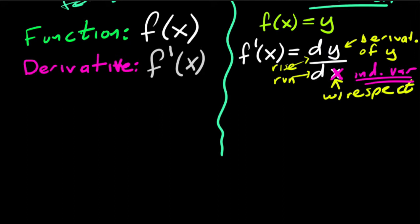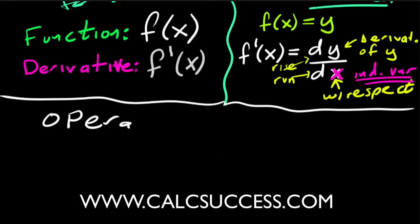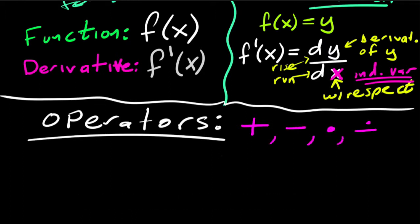Another way of using Leibniz notation is as an operator. We already have several operators we know: the plus sign, minus sign, times, divide. These are all operators because, for example, if you have four plus two, that plus operator is telling you to add those two numbers, and you'd say that equals six.